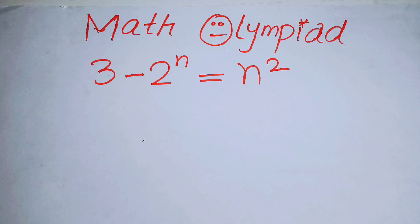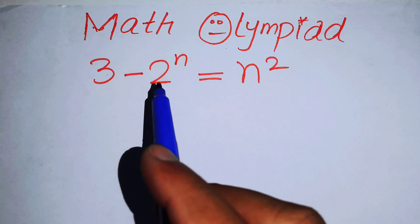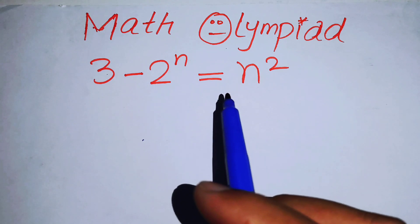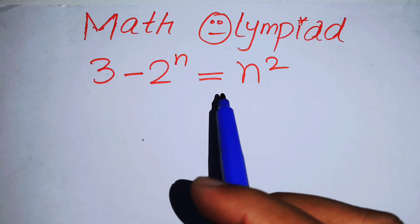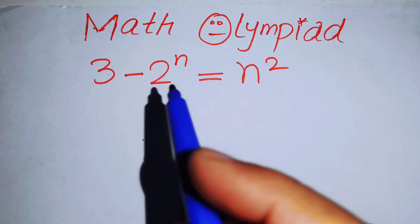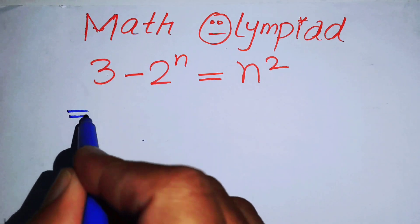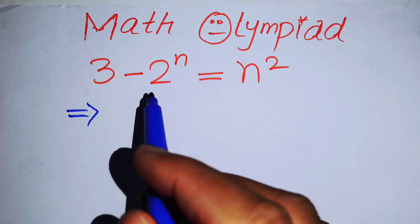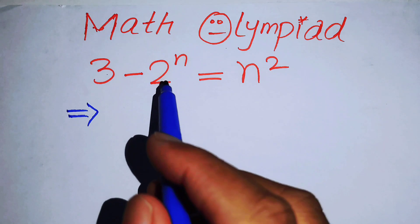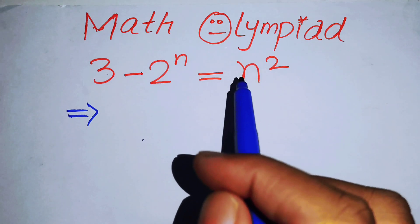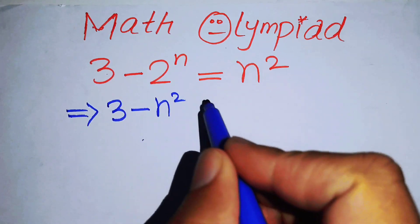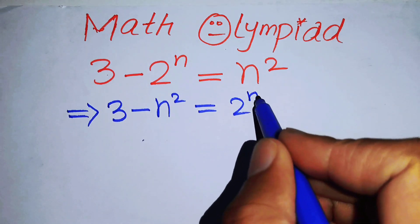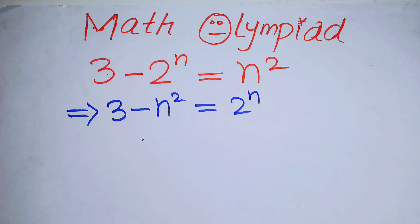Hello everyone, welcome back to the Map of Mathematics. In this video we are going to solve this algebra problem: 3 minus 2 to the power of n is equal to n squared. We will solve this problem for the values of n. The first thing we are going to do is rearrange this equation — we move 2 to the power of n to the right hand side and n squared to the left hand side, and we write it as 3 minus n squared equals 2 to the power of n.